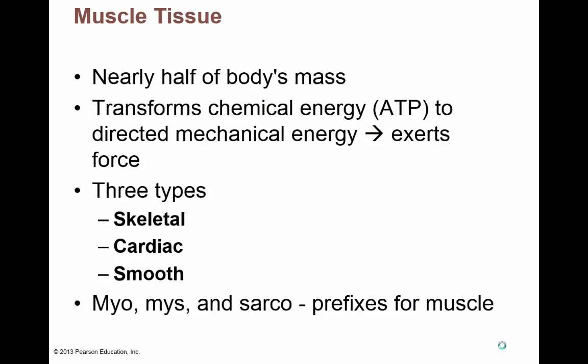Muscle tissue is nearly half of your body's mass. One of its jobs is to take chemical energy in the form of ATP and turn it into mechanical energy — meaning our muscles are going to move. The three types of muscle tissue are skeletal muscle, cardiac muscle, and smooth muscle. And yes, myo, mys, and sarc are all prefixes for muscles.